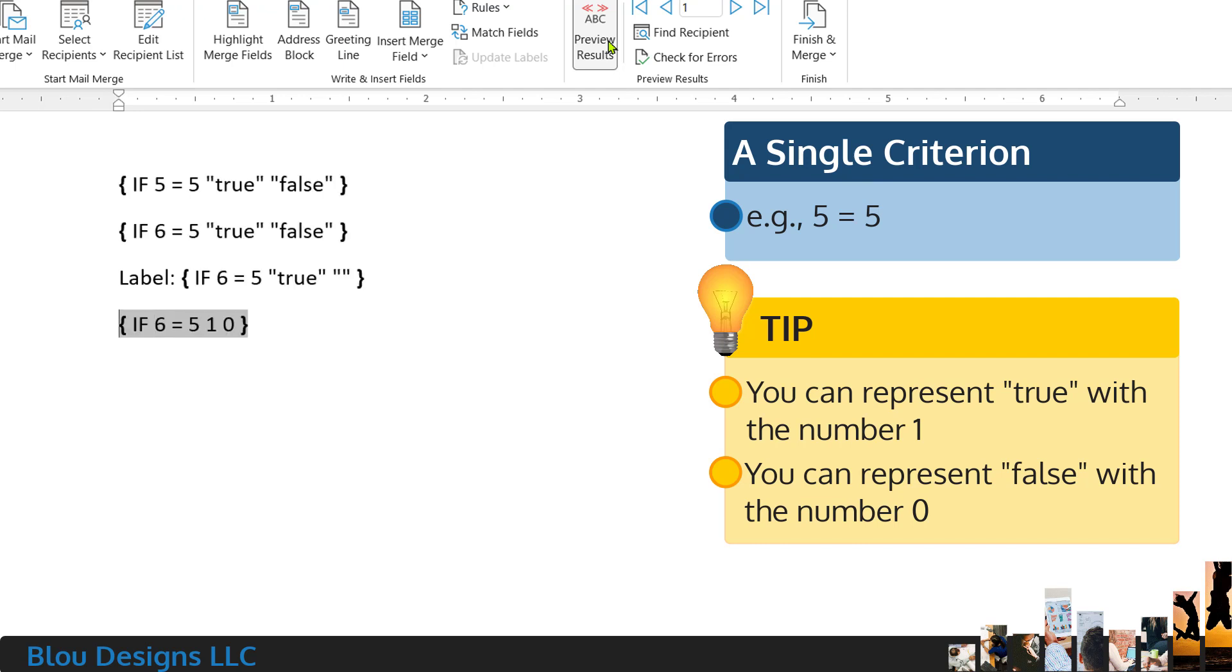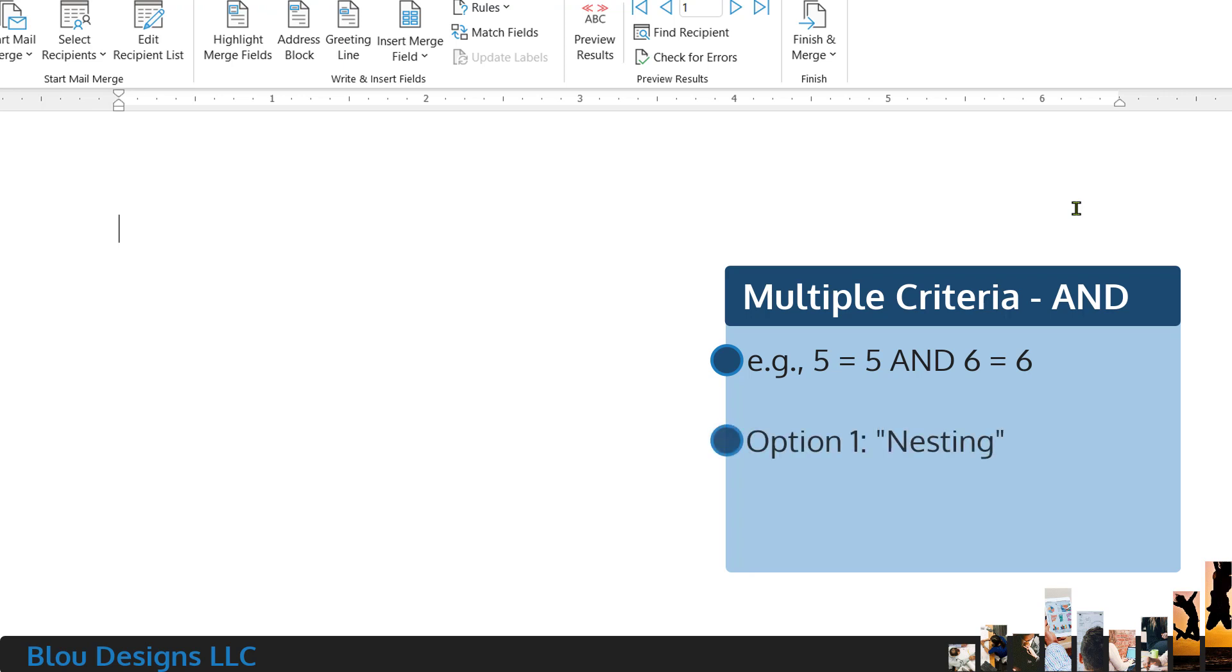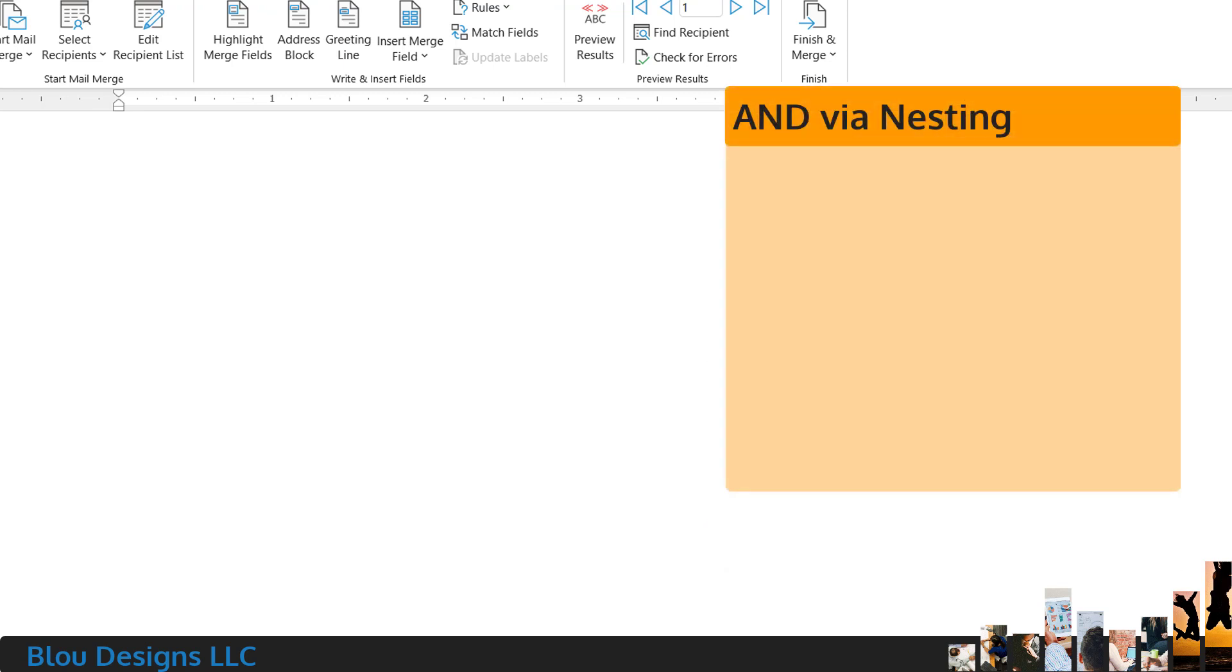In each of these cases so far, our evaluations have been pretty simple. But real-world evaluations are rarely this easy. What if we want to see if two things are true at the same time, like if 5 equals 5 and 6 equals 6? Word doesn't give us an easy way to just type that in with the word and, but we can use the if-then-else syntax in two different ways to pull this off: as a nested if-then-else and as a calculated formula as our expression to evaluate.